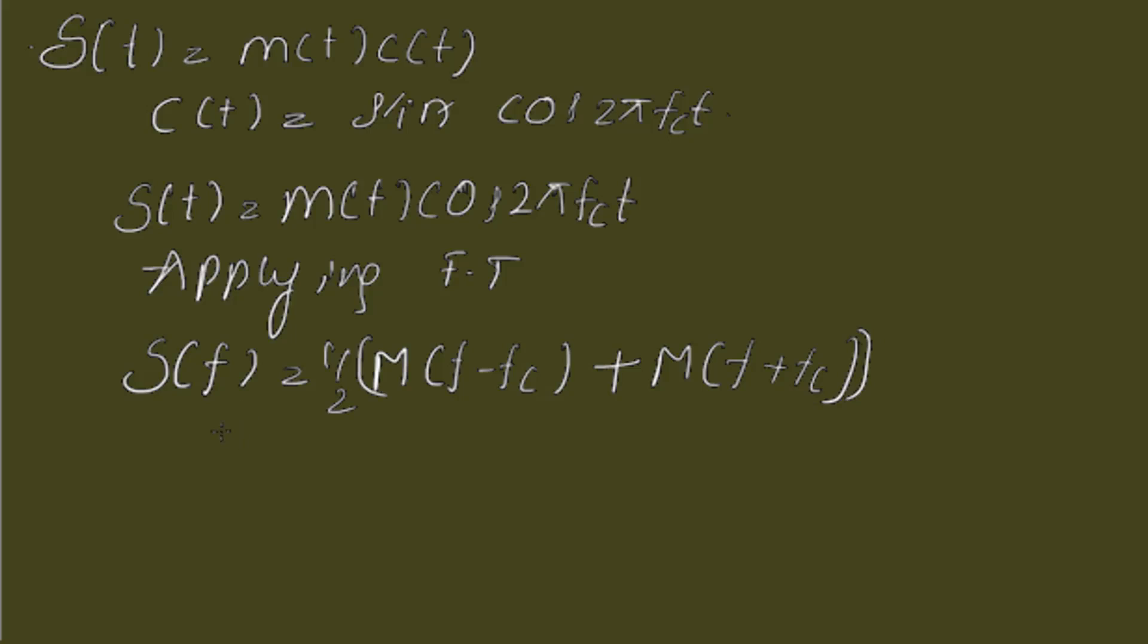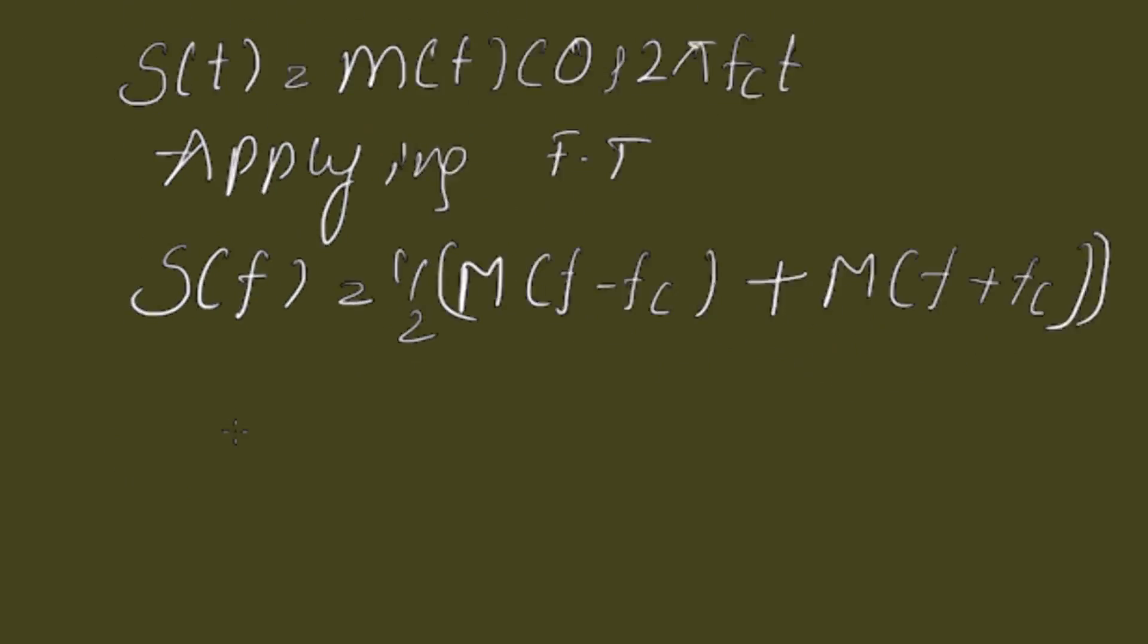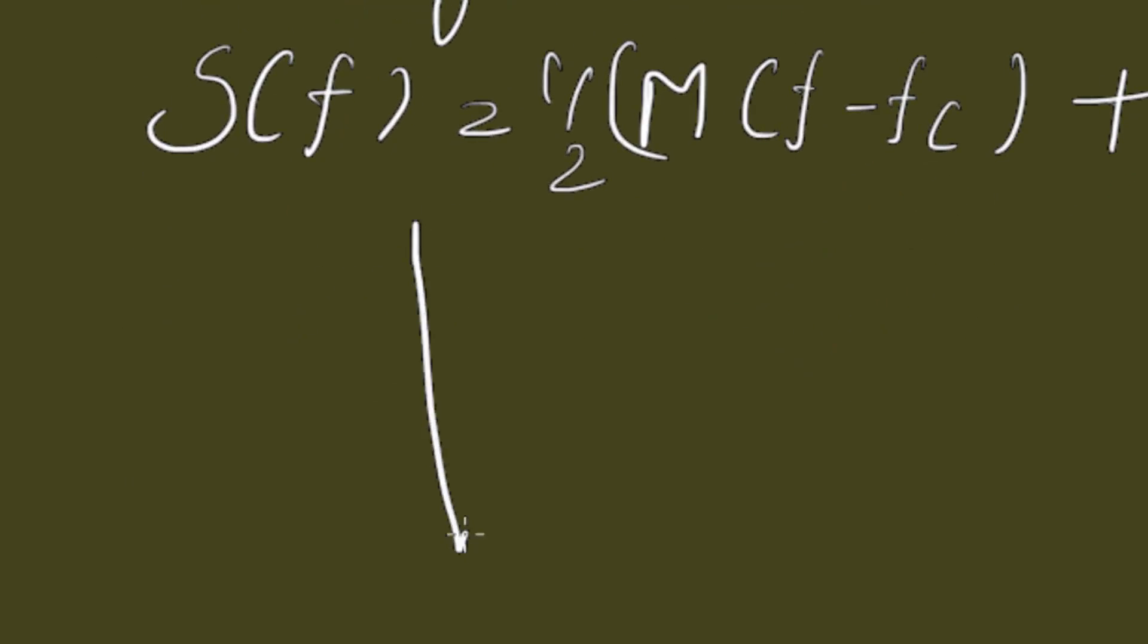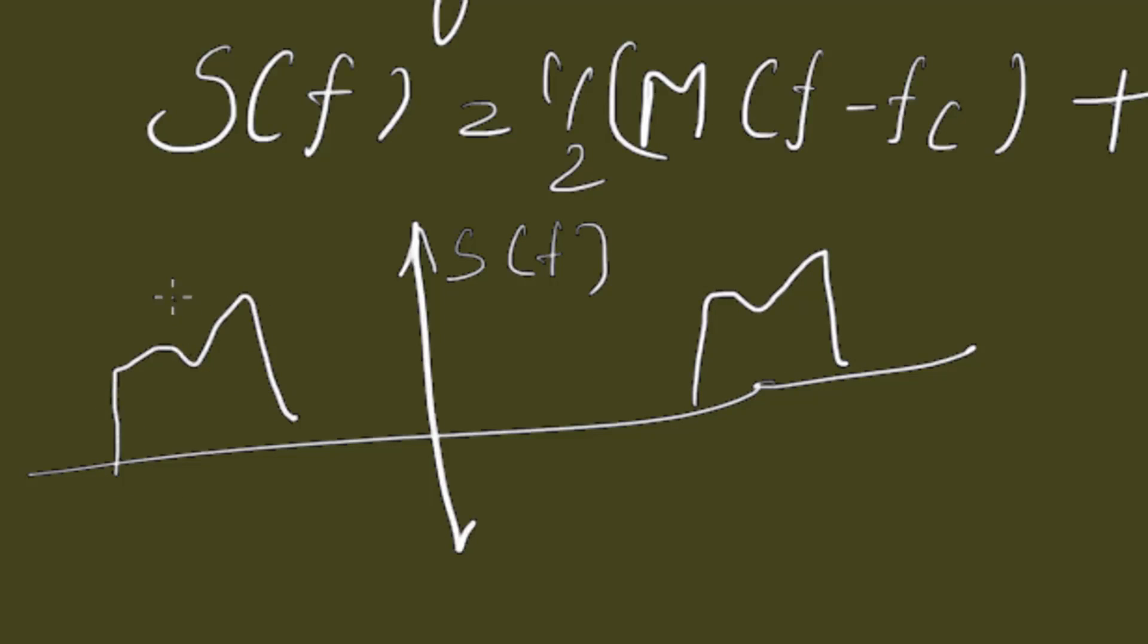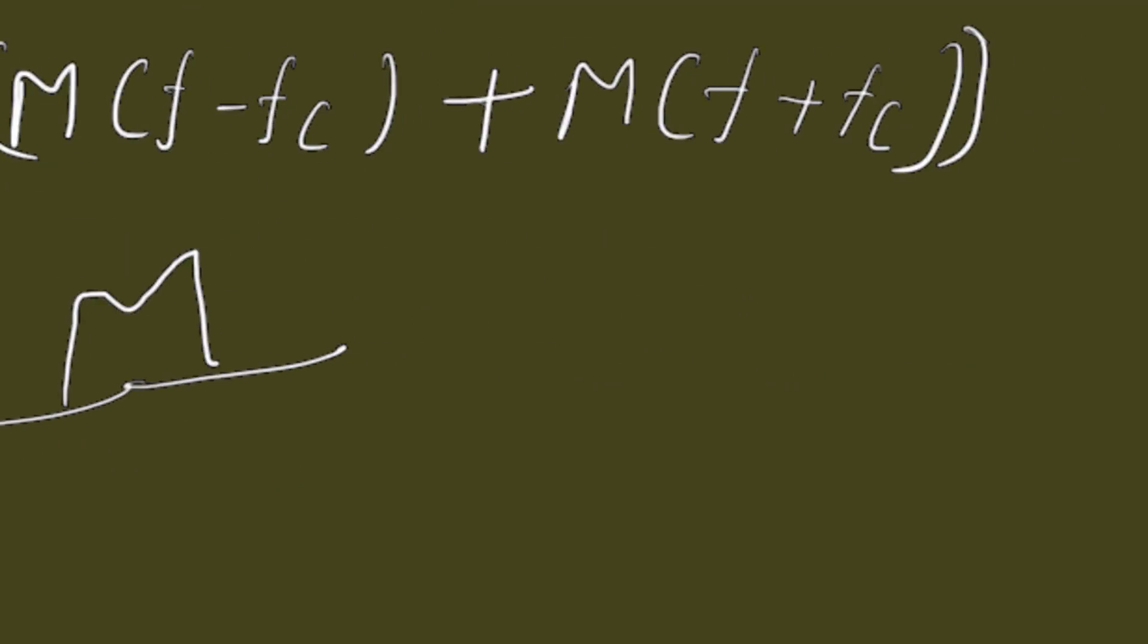This is the Fourier transform of the signal. This is according to the modulation property of the Fourier transform. And if we consider the spectrum of this wave, the modulated wave, it will be this is S(f).